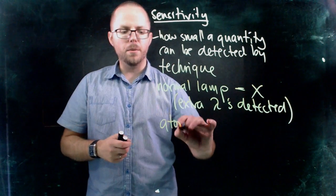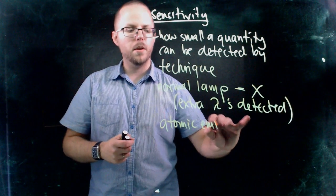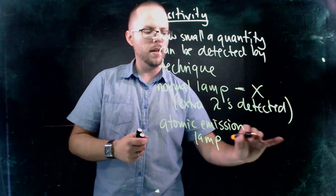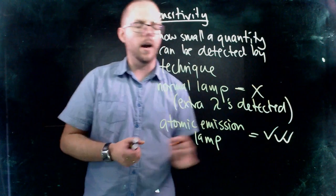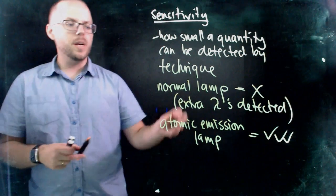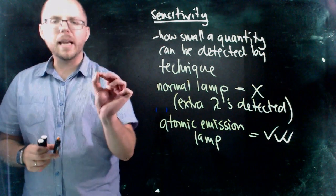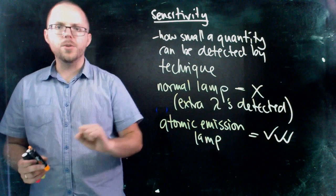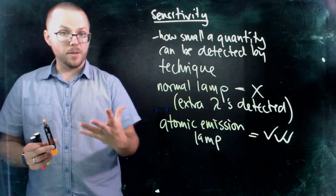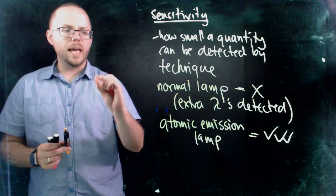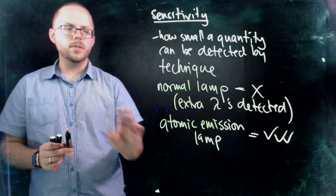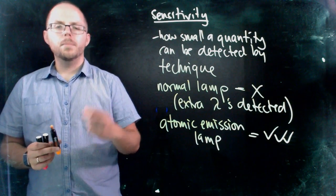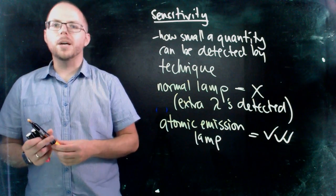But if we use an atomic emission lamp, all of a sudden, our sensitivity goes way up. Because what we can do is that then it means that we're only picking out the atom that we're looking for, which means that our background noise is very, very small by comparison. So that means that we can pick out much smaller levels using this kind of lamp than we can if we use a normal lamp, because we can pick it out from the background much more easily.